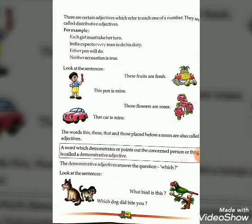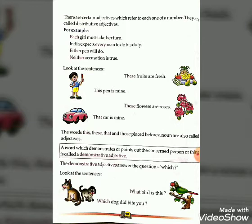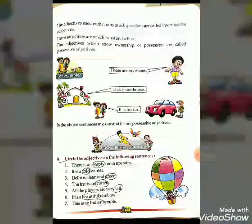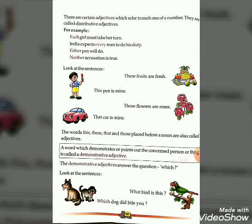A word which demonstrates or points out the concerned person or thing is called a demonstrative adjective. The demonstrative adjective answers the question 'which?' Look at these sentences: 'What bird is this?' 'Which dog did bite you?'